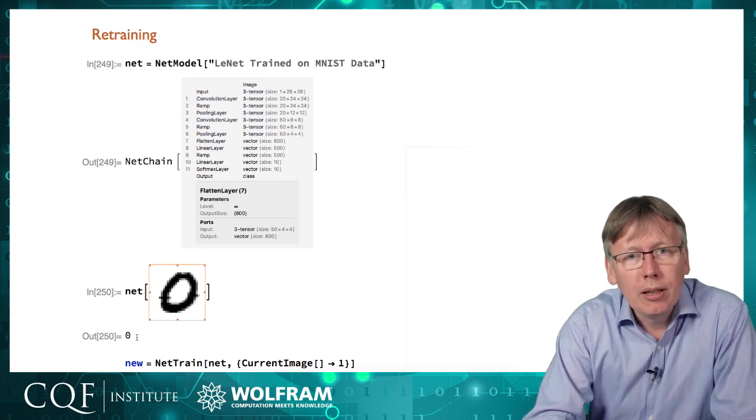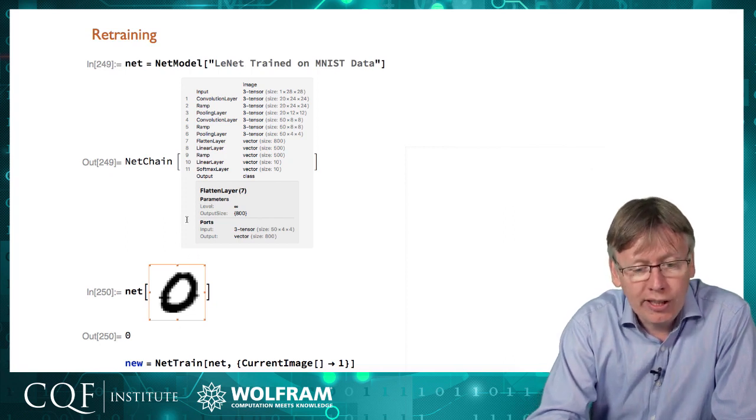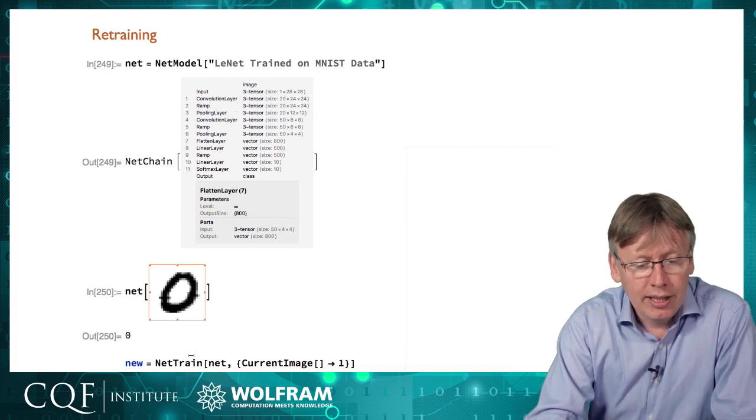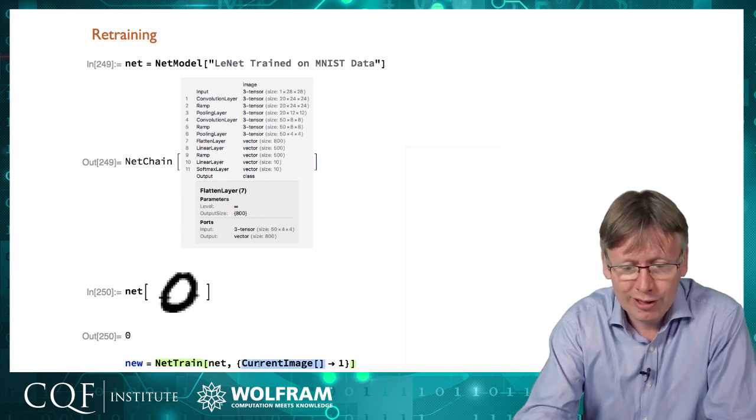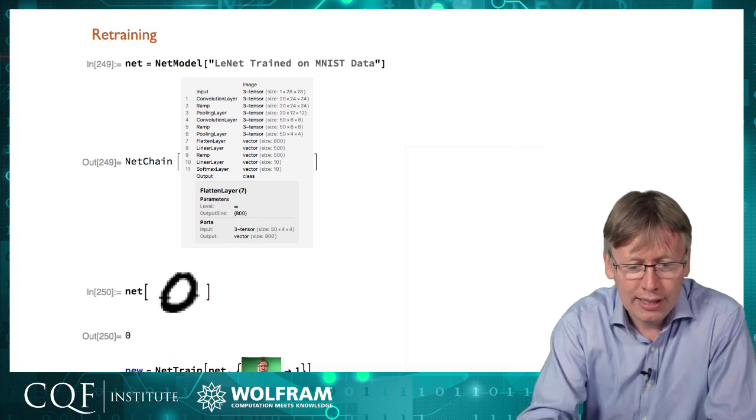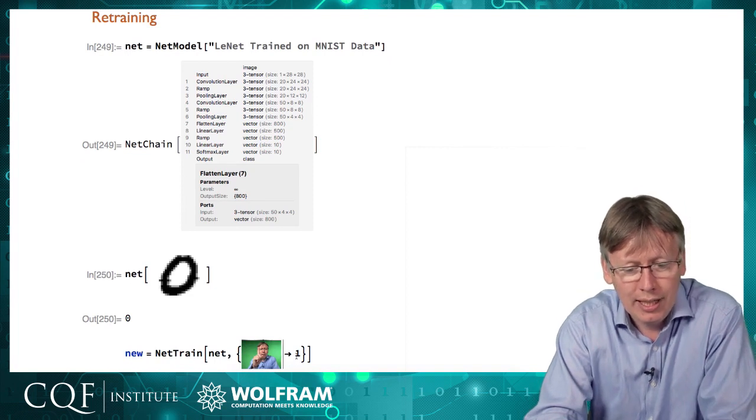But one of the things we can do with this is we can retrain that network. So I might not understand how this network works, but that doesn't mean I can't work with it. So I can take that network that we've just downloaded and I'm going to add some new data to the network. So let me just run this current range command here and hold up a finger into the picture and it's now grabbed something from my webcam here that is me holding up a finger and I'm going to tell it that that represents a one.